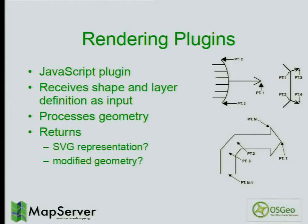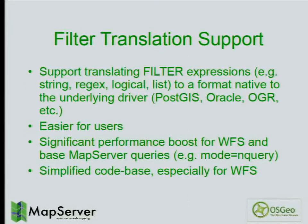The next step after styleItem JavaScript will be a rendering plugin. Using a similar mechanism — which is not fully defined yet — we'll need the ability to modify geometry. This will likely be a new GeomeTransform mechanism: a GeomeTransform with a JavaScript function that modifies the geometry and returns it to MapServer for rendering.